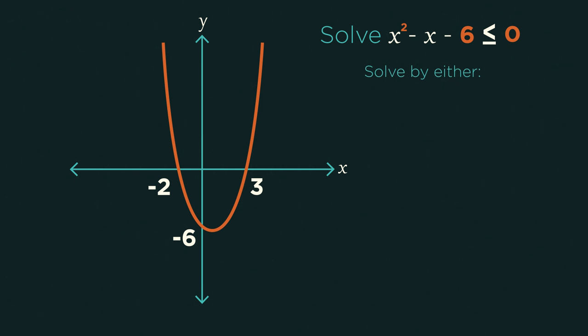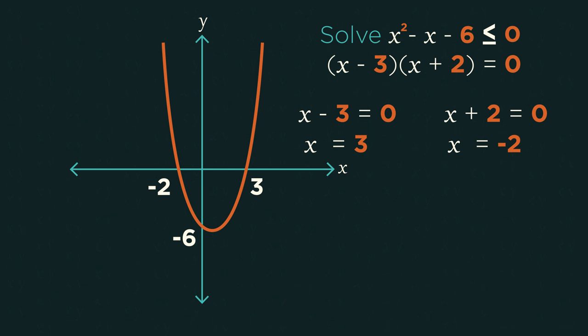Solve it like you normally would. So factorize, quadratic formula, or complete the square. This one factorizes. Notice how I've changed it to become equals. Solve each bracket, so x equals 3 and x equals negative 2.